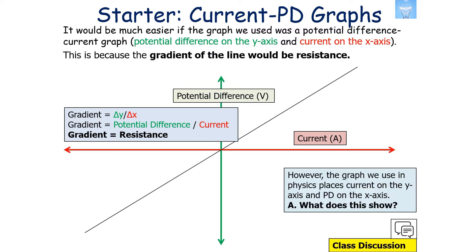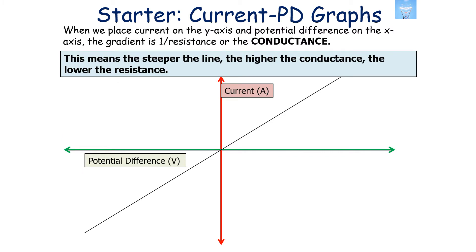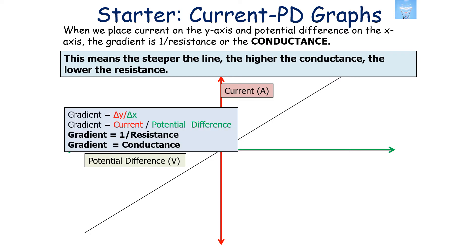However, we place current on the y-axis and potential difference on the x-axis. This means the gradient shows not resistance but 1 over resistance — something called the conductance. So for a current potential difference graph, the steeper the line, the higher the conductance and the lower the resistance of the circuit. The gradient is current over potential difference, which equals 1 over resistance, which is the conductance.